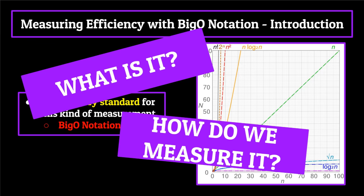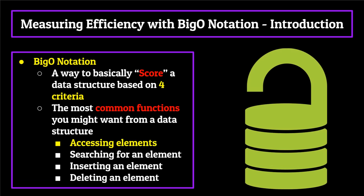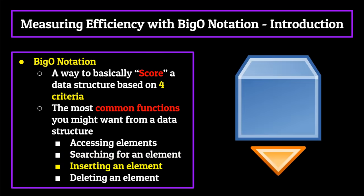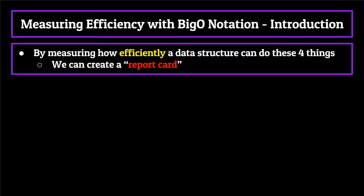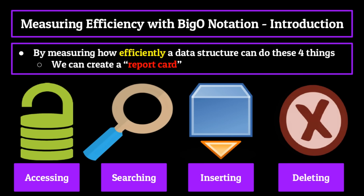Because there are so many different ways to store information, programmers have developed this idea of big O notation as a way to basically score a data structure based on a few different criteria. For the purposes of this video, we will be using four criteria representing the most common functions you might want from a data structure: the ability to access a specific element within the data structure, search for a particular element, insert an element, and remove an element. By measuring how efficiently a certain data structure can do these four things, we can basically create a report card which measures how efficient a certain data structure is, giving us a pretty good overview of what it's good at and what it's bad at, helping us decide which one to use.